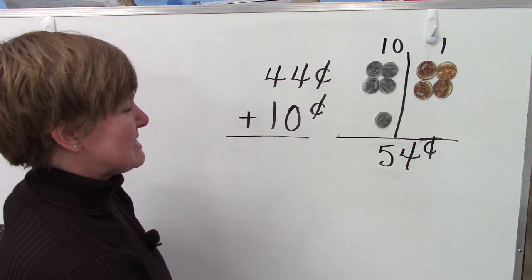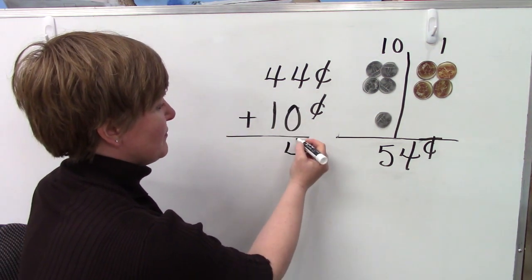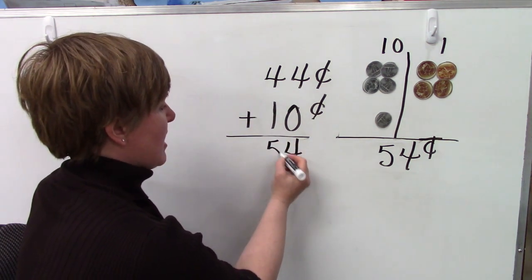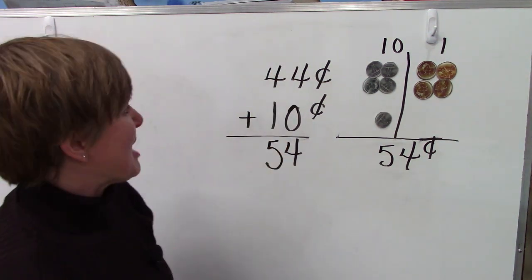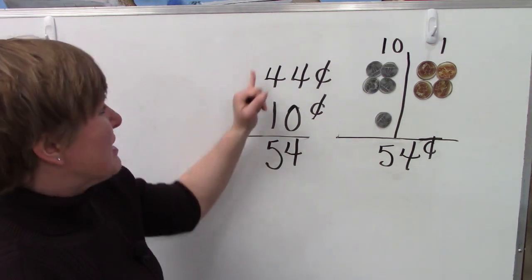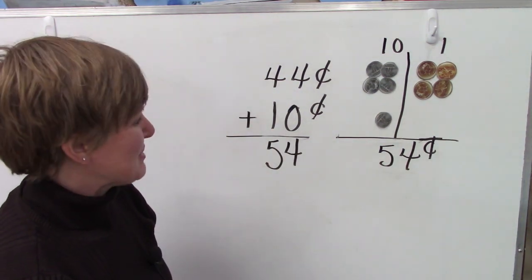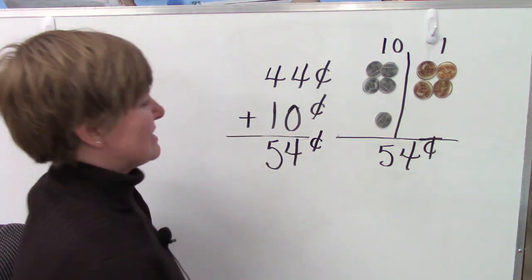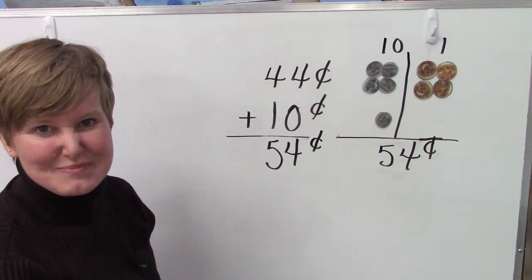Let's try it here in our addition problem. 4 plus 0 is 4. 4 plus 1 is 5. I made sure that I had my places lined up. The 4 and the 0 are both in the ones place. And the 4 and the 1 are both in the tens place. 54 cents. 54 cents. When we add 10 cents to 44 cents, we end up with 54 cents. Good job.